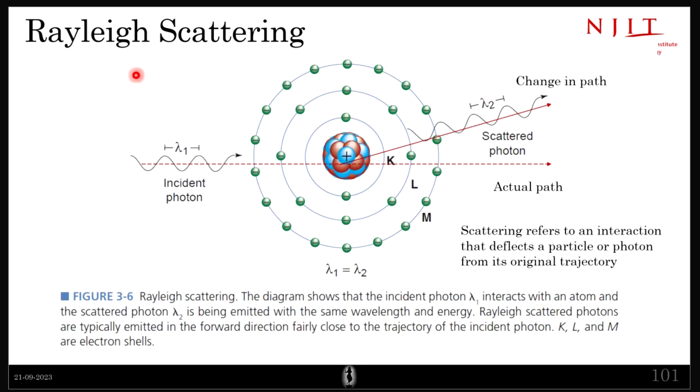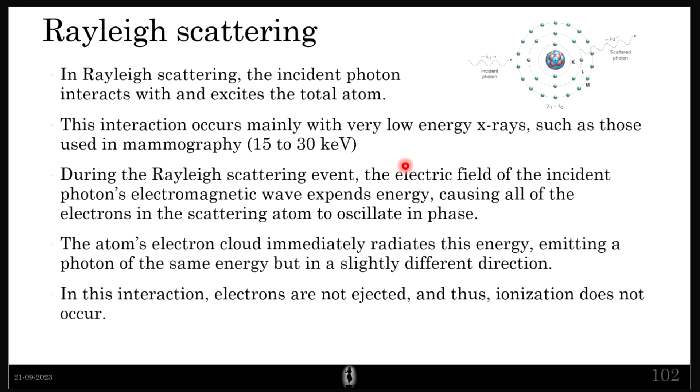That is why it is called Rayleigh scattering. Rayleigh is the person who discovered this. In Rayleigh scattering, the incident photon interacts with and excites the total atom. Excites means it vibrates in some sense. This interaction occurs mainly with very low energy x-rays such as those used in mammography. That is like 15 to 30 kilo electron volts x-rays. Rayleigh scattering mostly occurs only in this energy range.